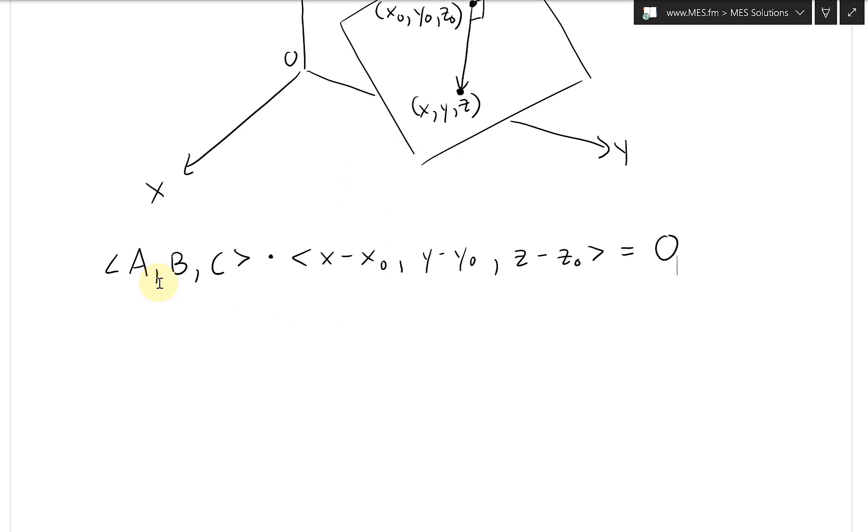So now we can just do the dot product. Remember that we just multiply this by this, B by the middle, C, this one, add them all. So we just multiply by the components and add. So what we get is A(X - X₀) plus B(Y - Y₀) plus C(Z - Z₀), and this equals to zero.